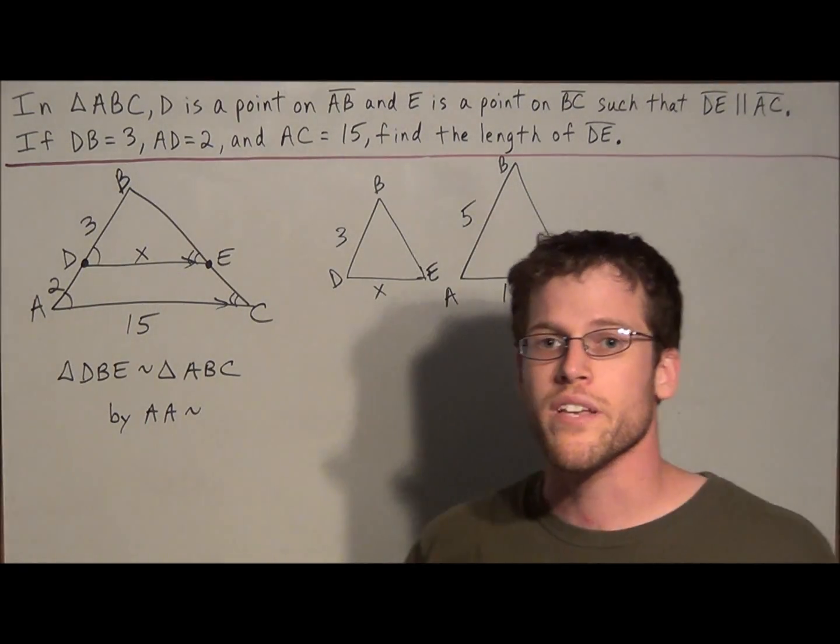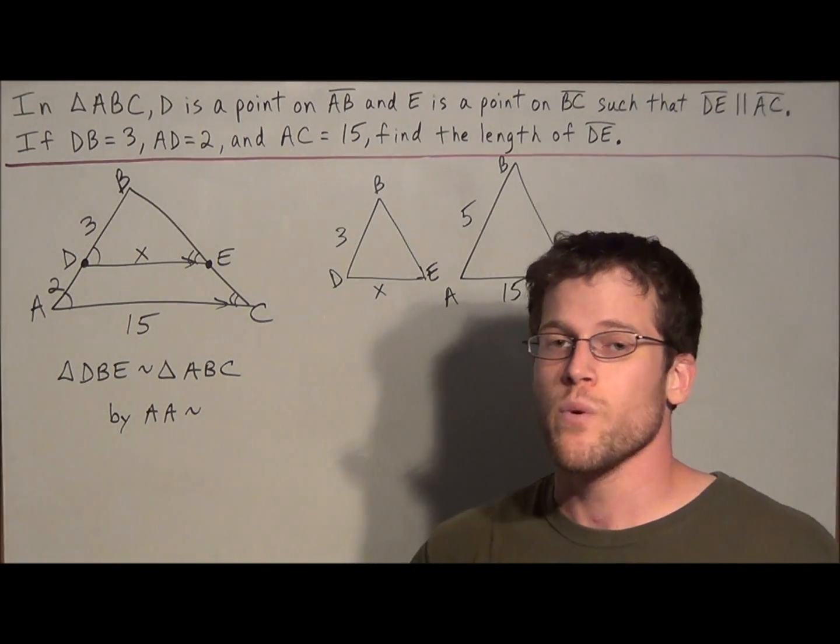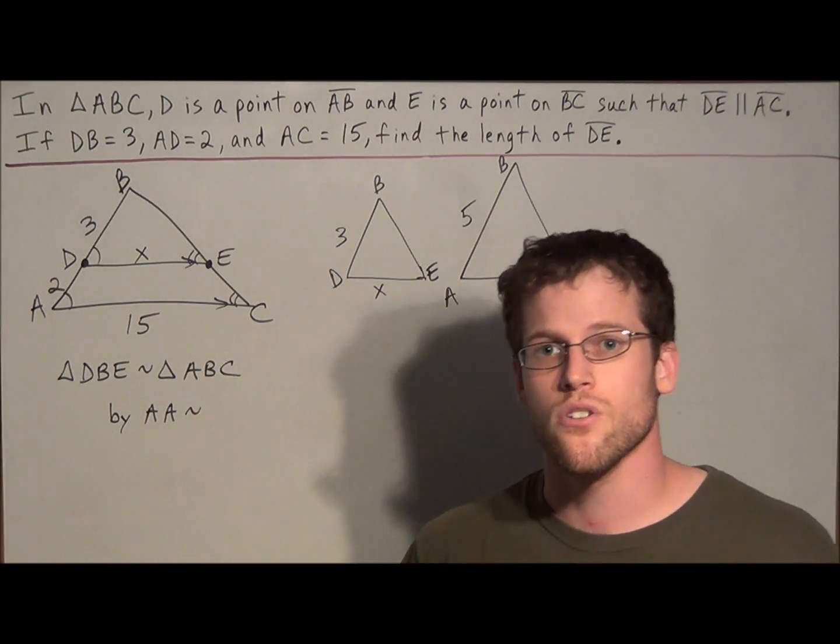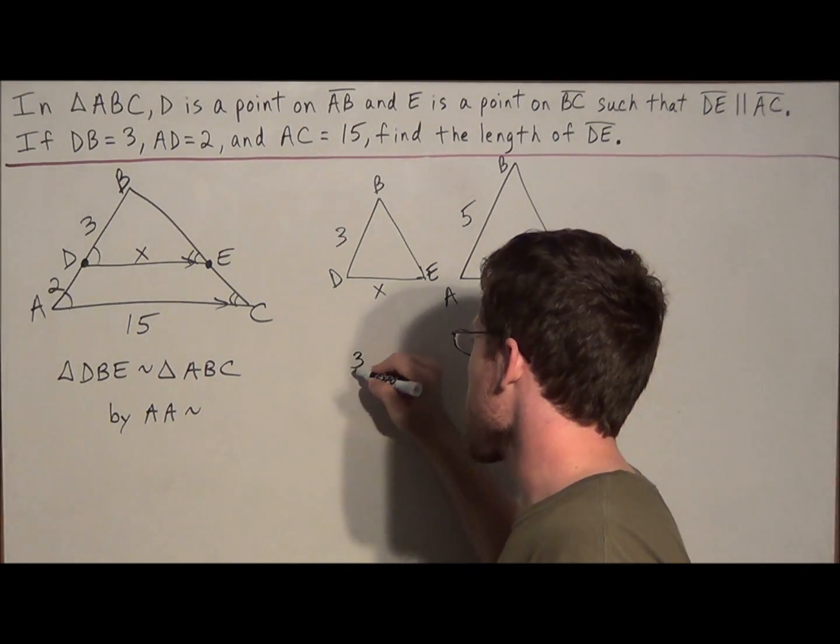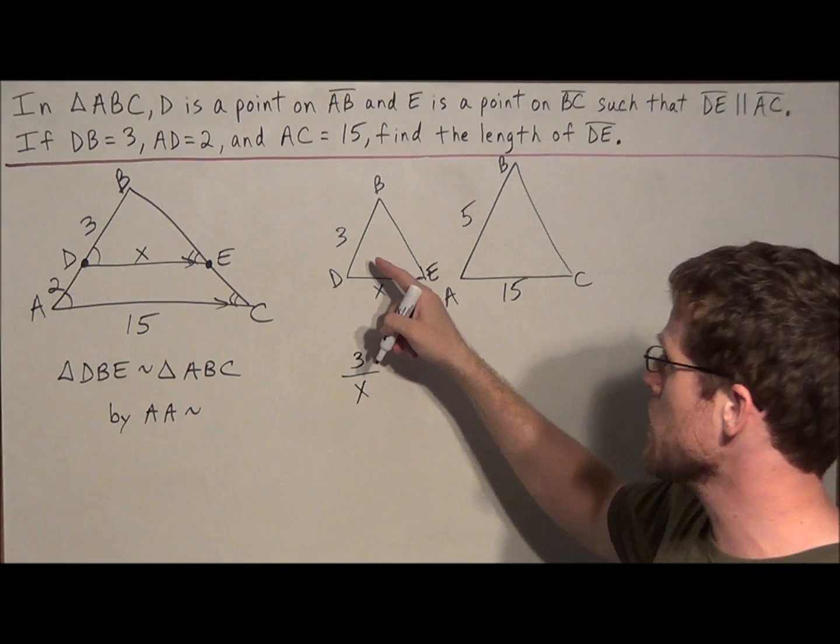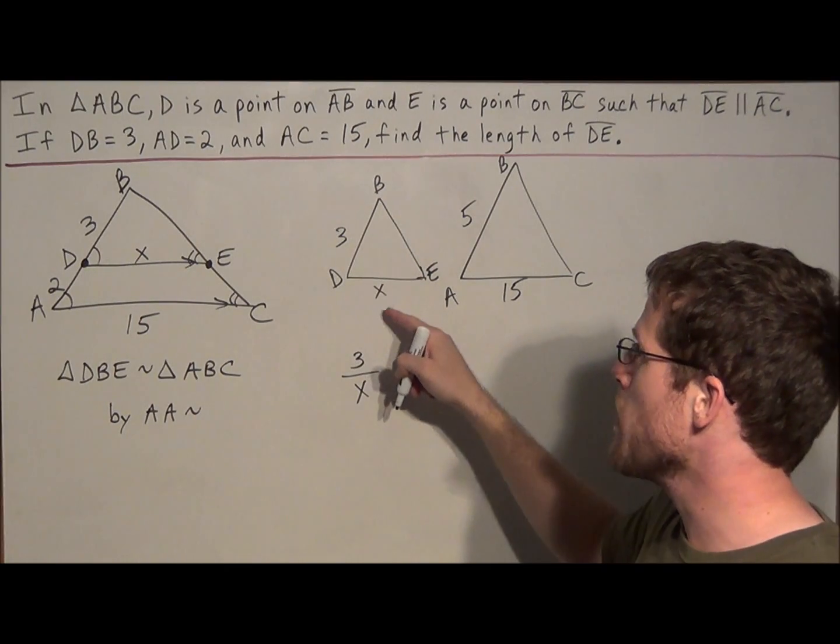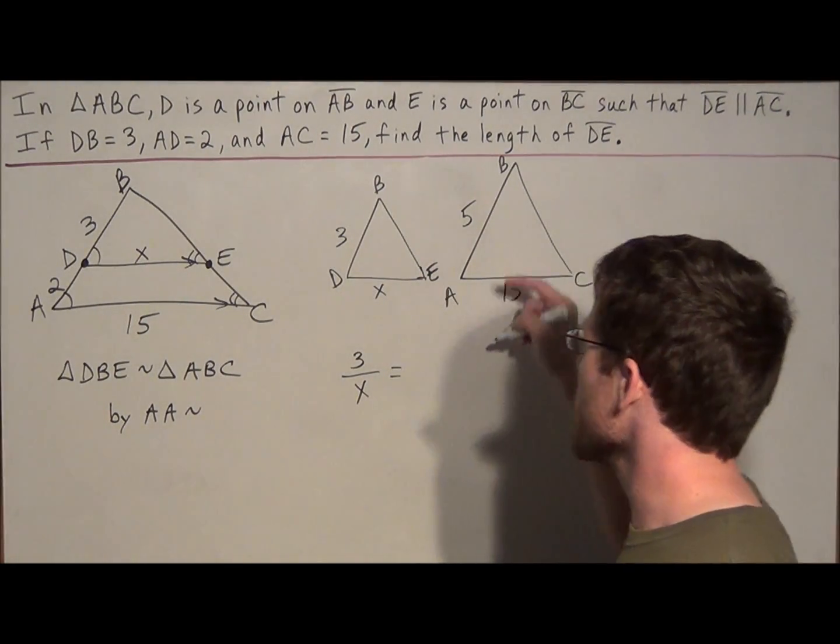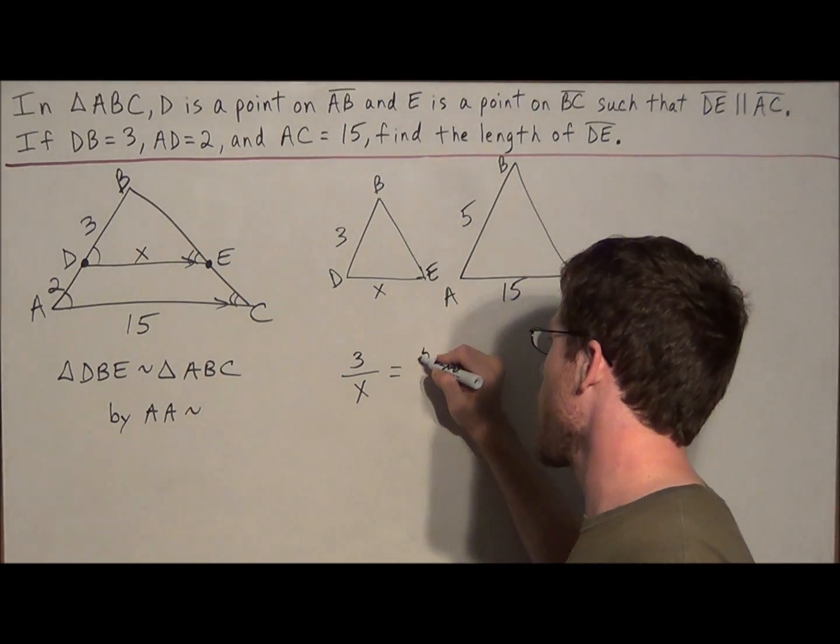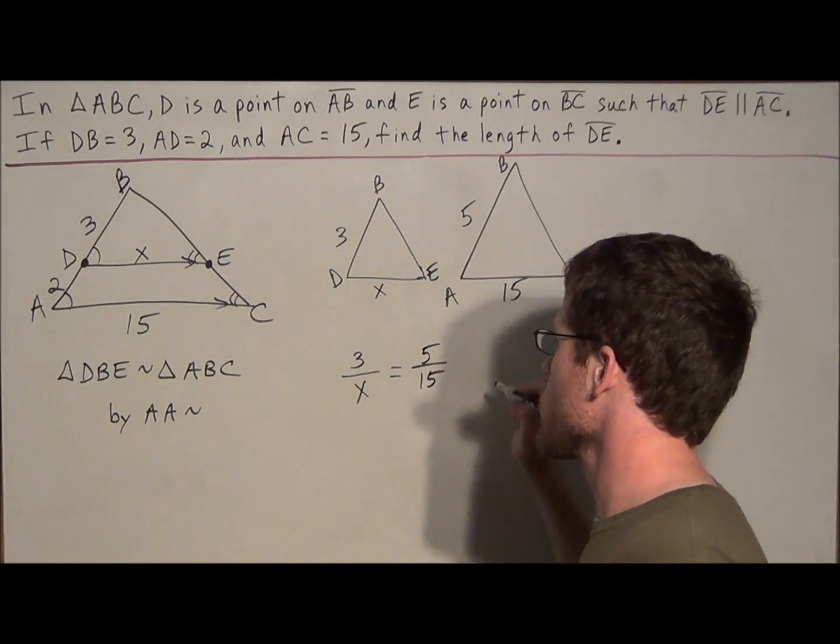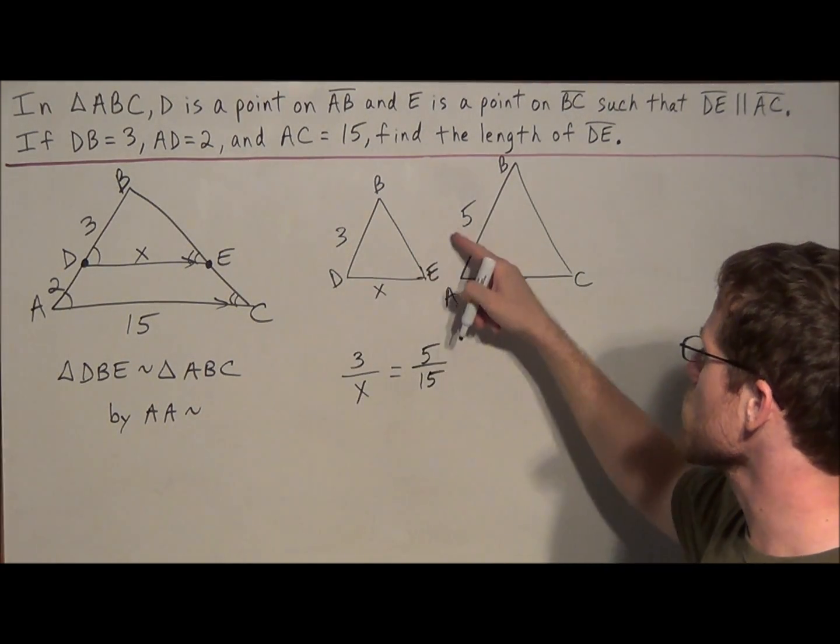But now that we have these triangles lined up, we could set up a proportion and find the value of the missing side. And now the strategy for this, we could set up many different ratios as long as we're consistent. And what we mean by this is that let's say we set up the ratio 3 over X. We're comparing the side on the left and the bottom. So we're comparing the left side to the bottom or the base. So when we set up the ratio in this triangle, we need to compare the side on the left to the bottom. So we're setting up 5 over 15. So just once again, we're comparing the left to the bottom. So 3 over X equals 5 over 15.